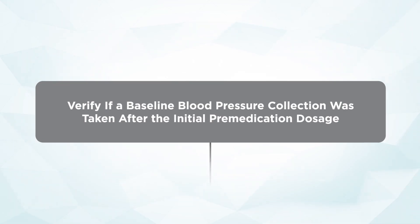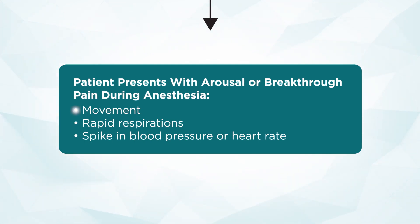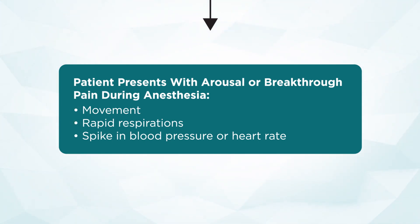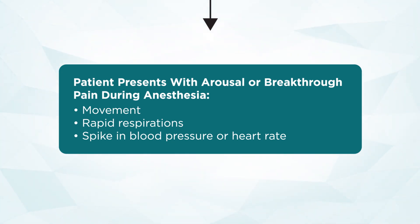Now we're going to talk about the patient that starts to show us the signs of arousal or breakthrough pain. The patient who moves on the table, the patient who may have an increase in respiratory rate — which is one of the very first signs — and later on have changes in hemodynamics, including an increase in blood pressure as compared to baseline as well as an elevation in heart rate.